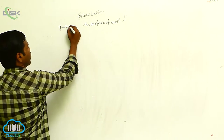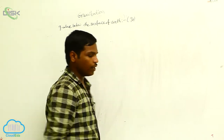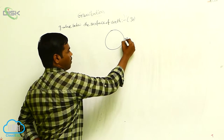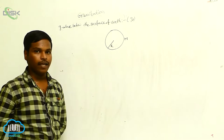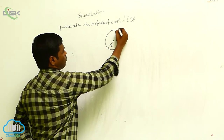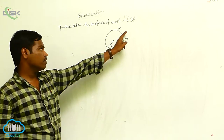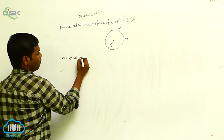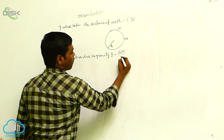Below the surface of the earth, the g value below the surface is g_d. Capital M is the mass of the earth, and small m is the mass of an object on the surface of the earth. The acceleration due to gravity on the surface is g equals GM over r squared.